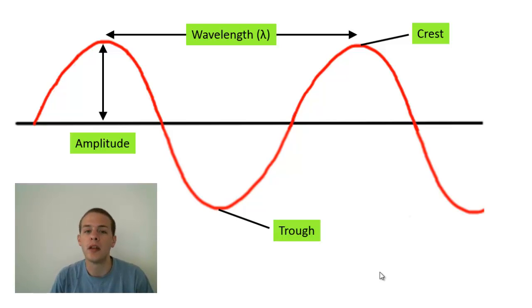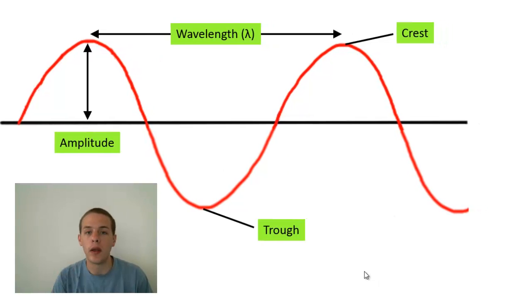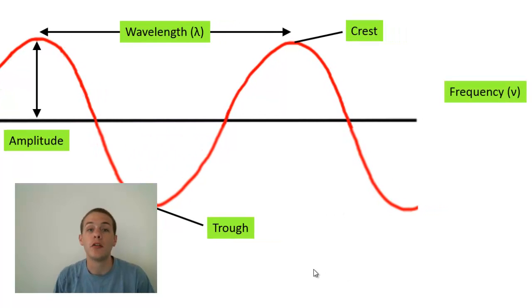Now there's another property of waves that isn't shown because this is just a snapshot of a wave. The other property that I'm thinking of cannot be shown in a wave that is at rest, it has to be shown in a wave that is moving. And that's called the frequency of the wave. Now the symbol for frequency, it looks a lot like a V, it's actually a Greek letter, this is called a nu. So it's a Greek nu.